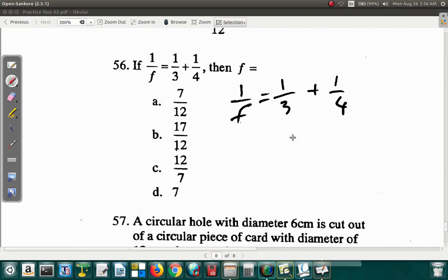Now let's look at this. 3 and 4, LCM is 12. 3 into 12 goes 4 times, 4 times 1 is 4. Plus 4 into 12 goes 3 times, 3 times 1 is 3. 4 and 3 is 7, 7 over 12. So 1 over F is equal to 7 over 12. So when you flip them, find the reciprocal F over 1, which is F, it's 12 over 7. This is C.